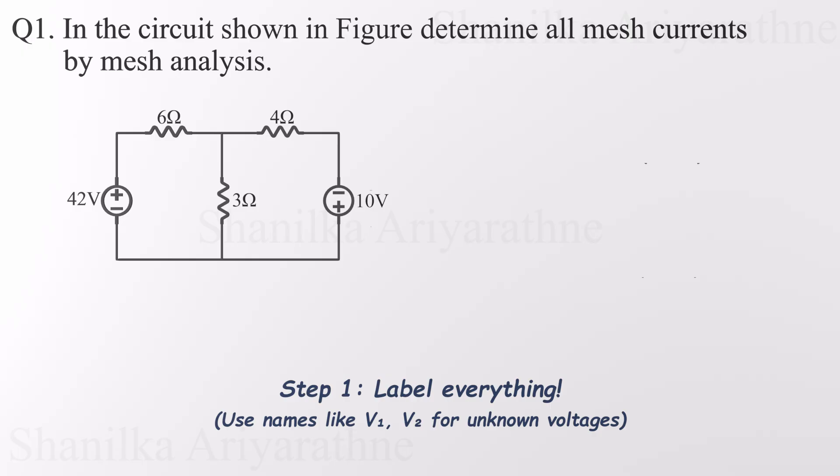First up, label the voltage across each component. The voltage sources are already labeled, so we'll label the voltages across the resistors as V1, V2, and V3. That wraps up step one.